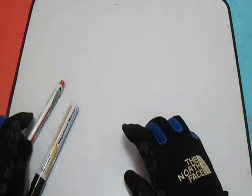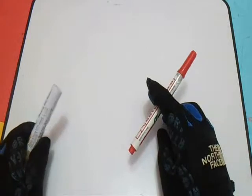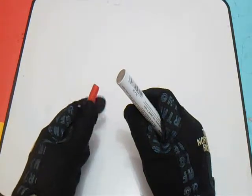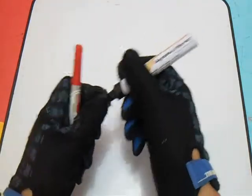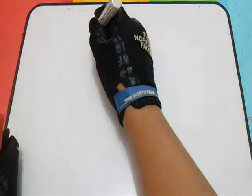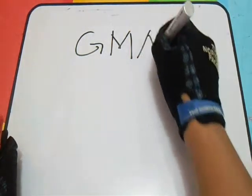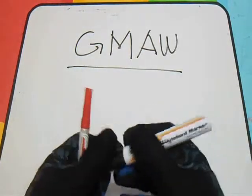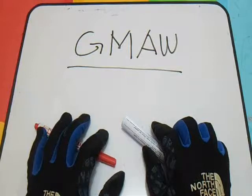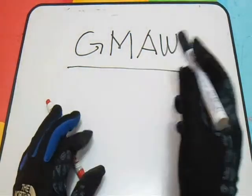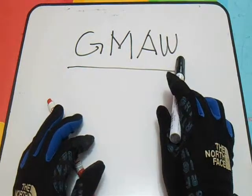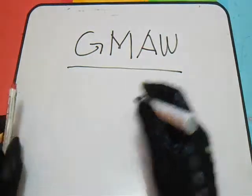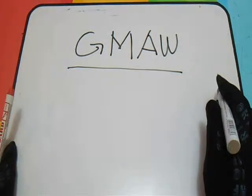Hi, welcome and thanks for watching and subscribing. Now let's discuss the GMAW electrode identification system. GMO stands for Gas Metal Arc Welding. Now, the identification system of the GMAW electrode is as follows.